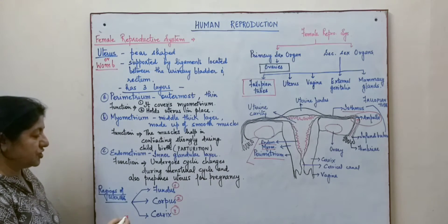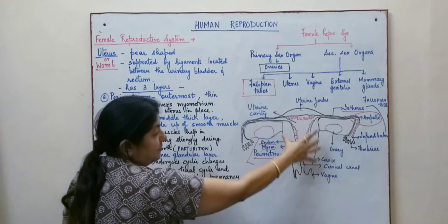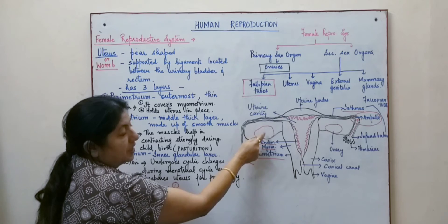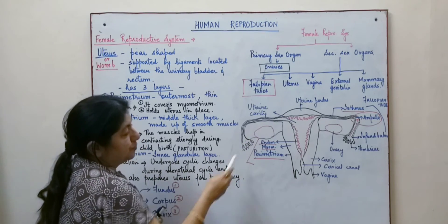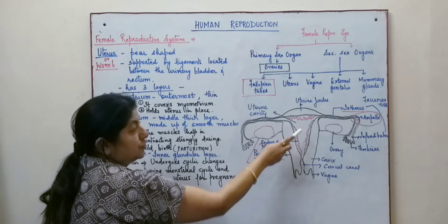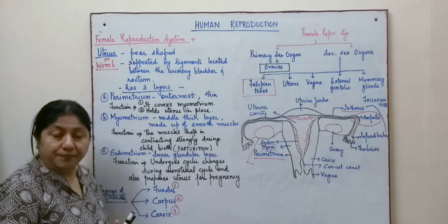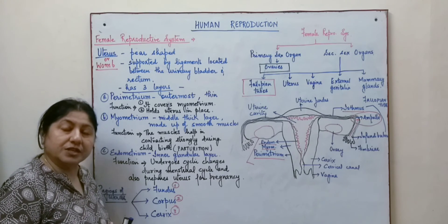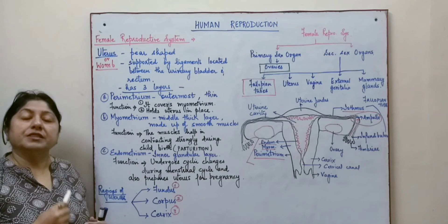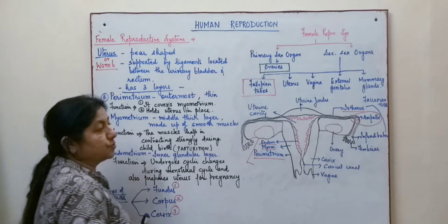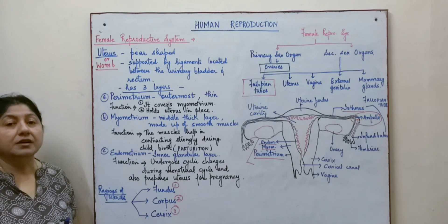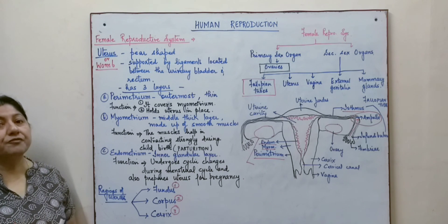When we talk of the functions of the uterus, it is the site where the ova are received. Once released from the ovary, the ova travel through the fallopian tube — through the fimbria, infundibulum, ampulla, and isthmus — and finally reach the uterine cavity. If fertilization takes place, implantation also occurs in the uterus and placenta formation takes place here. The uterus is also responsible for childbirth through the contractions created by the myometrium, making it an important part of the female reproductive system.